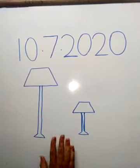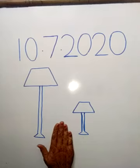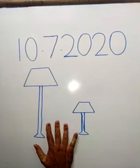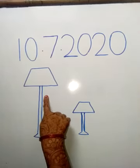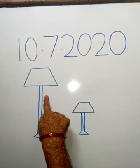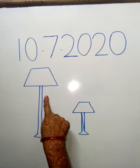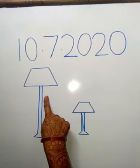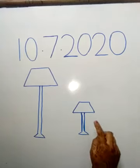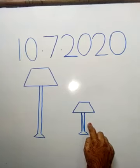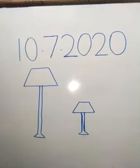Now children, here are two light lamps. One is tall — very good, Spruha! And the other is short — very good, Advik! One is tall, one is short.